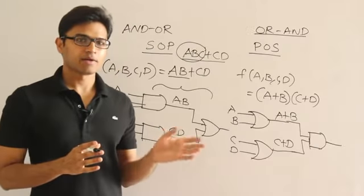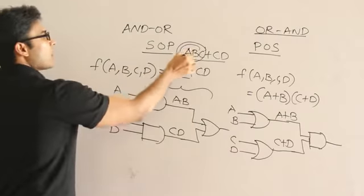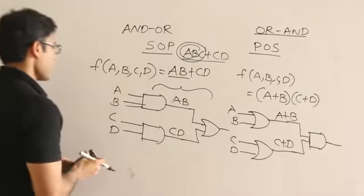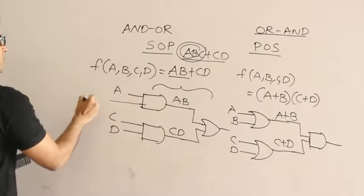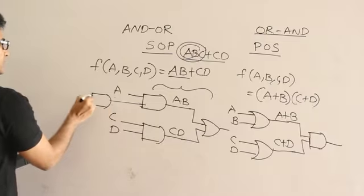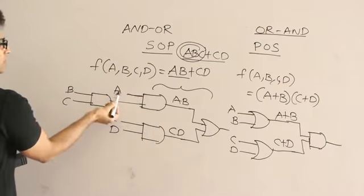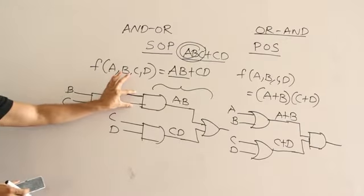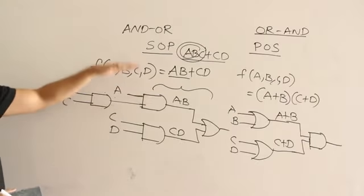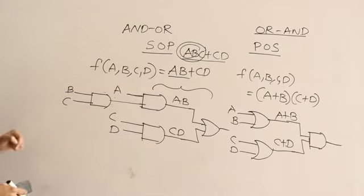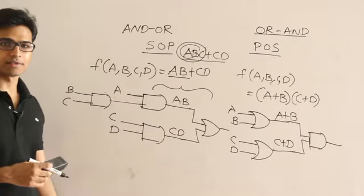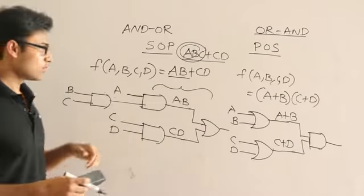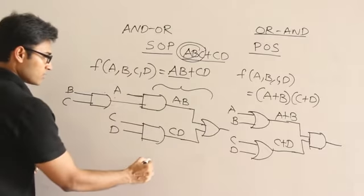If you want to have a fan-in of only 2 and you have three terms A·B·C, then you might have to AND A and B first, then AND the result with C — you cannot implement it in two levels. So depending on the fan-in of the gates, the number of levels will vary.